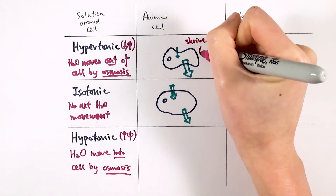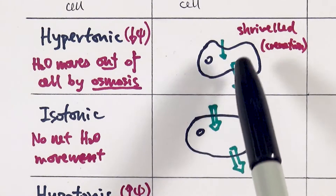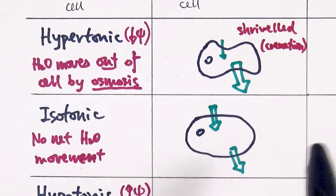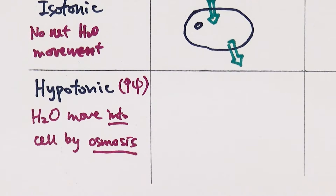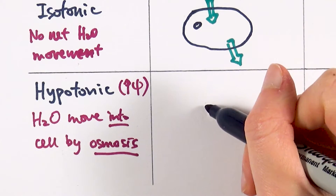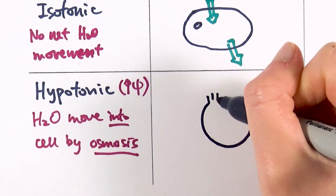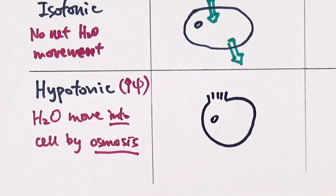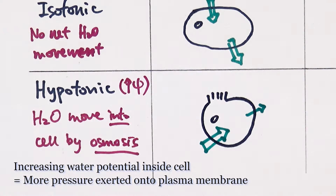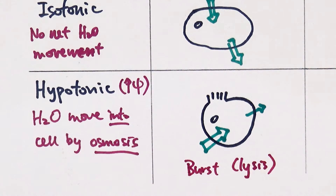In a hypertonic solution, the animal cell is losing its shape and we call that state shriveled — or another way of calling it is crenation. The cell has undergone crenation. In a hypotonic solution — for example pure water — there is a lower water potential inside the cell than outside, so there will be more water moving in than out. With an animal cell, they can't take in that much water. At one point it reaches a threshold where so much water has moved in that they are unable to contain it, and the cell will then burst. We say the cell has undergone lysis — a word meaning breaking or bursting.